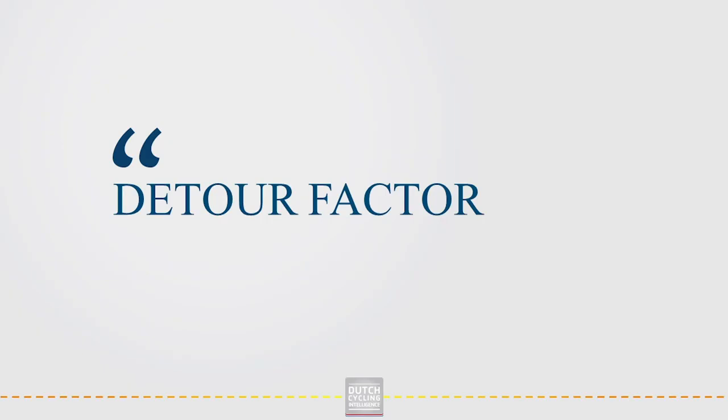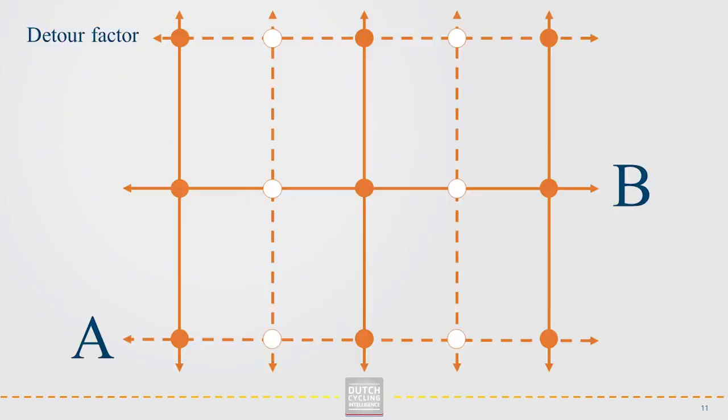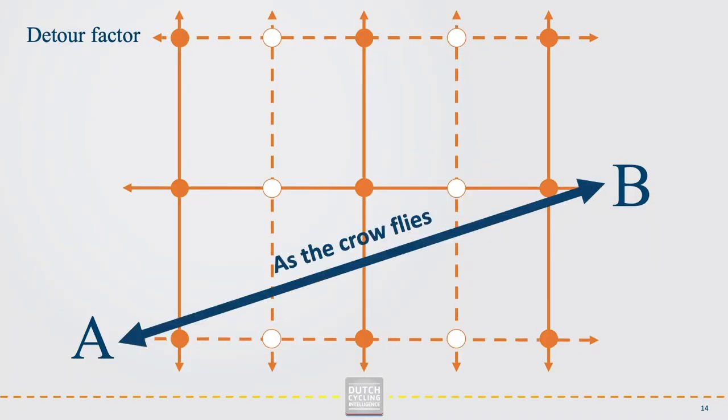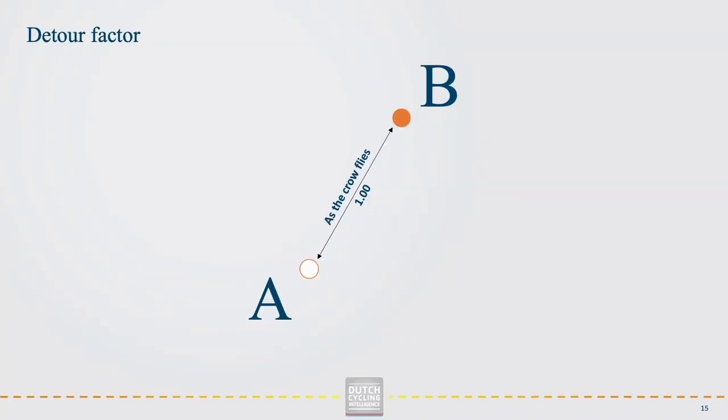The so-called detour factor can be used to assess the directness. We take the distance as the crow flies as reference and compare the actual distance on the road to the reference.